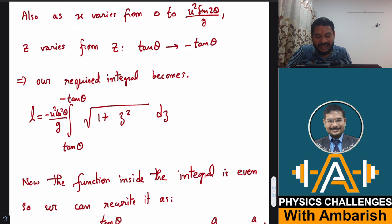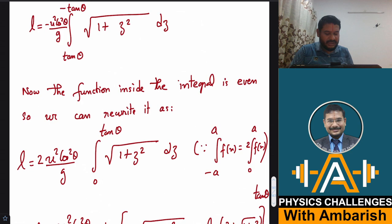And then our required integral simply becomes l is equal to minus u square cos square theta by g and limits varying from tan theta to minus tan theta and inside it becomes under root of 1 plus z square. So now this looks a little better. Now still we might not be knowing how to integrate this but still this looks a little better. And there is a minus sign sitting outside in this tan theta and minus tan theta, of course I can change the limits and drop this minus sign. And you can also see that this is an even function, that is f of minus z is same as f of z and the limits are from minus tan theta to tan theta.